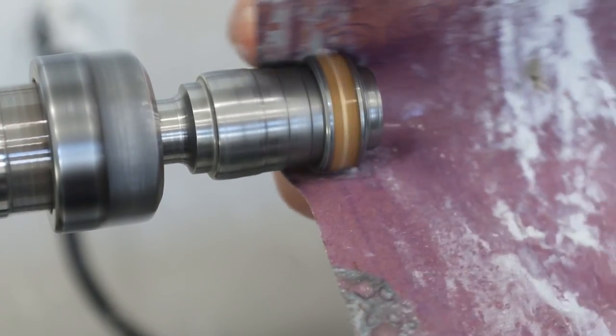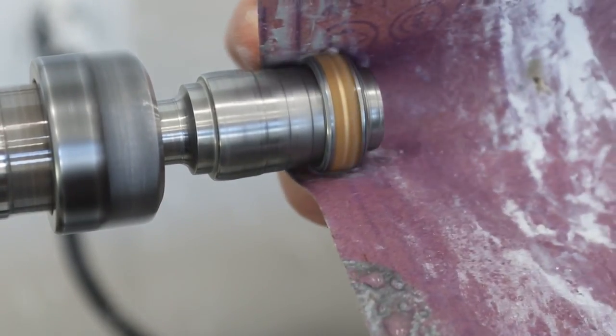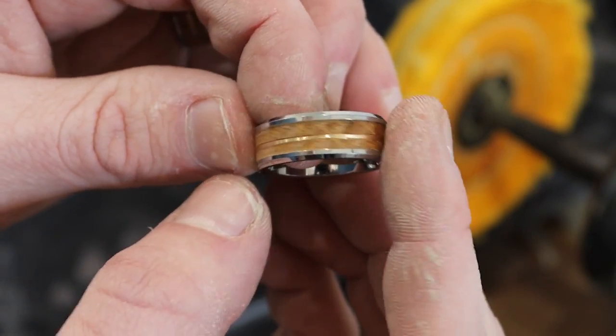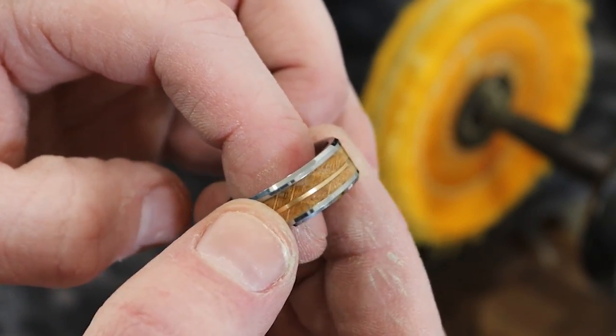Welcome back y'all. Today we are going to be showing you our take on how we inlay gold wire. This is a tungsten band, whiskey barrel, and gold. Stick around.